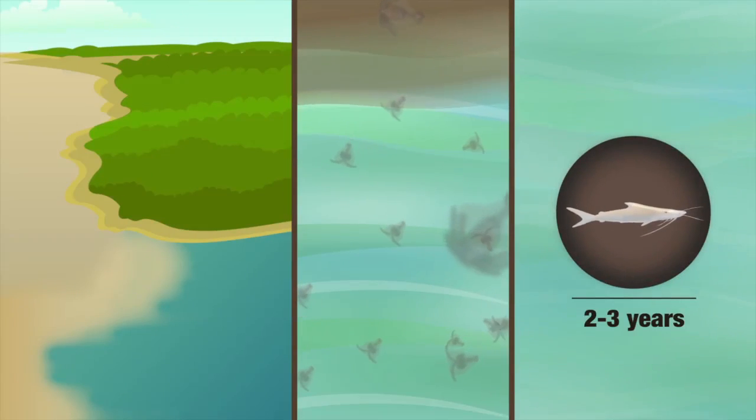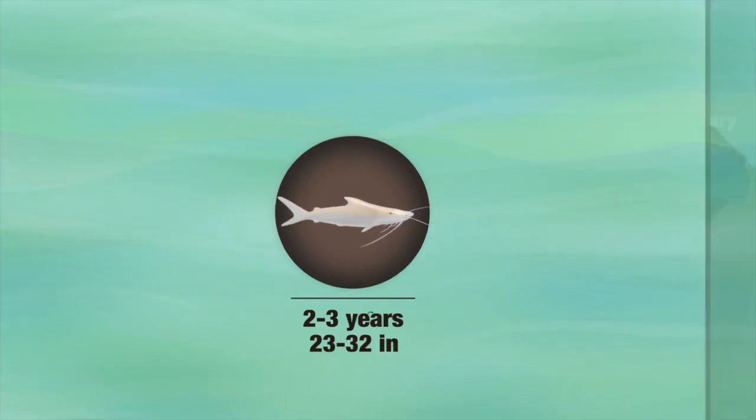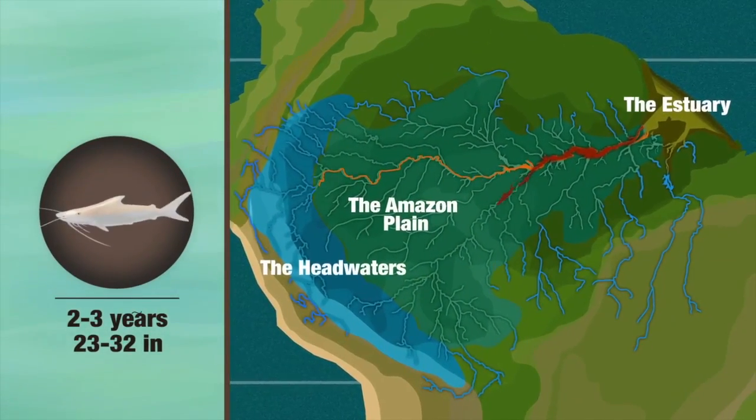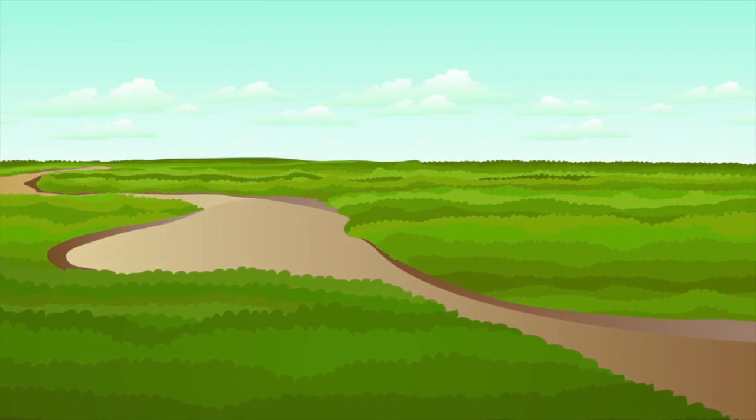After two or three years of enjoying life in the estuary, the Dorada is finally large enough to initiate its return to the Amazon floodplain. There, it will continue to grow and mature for another year or two.